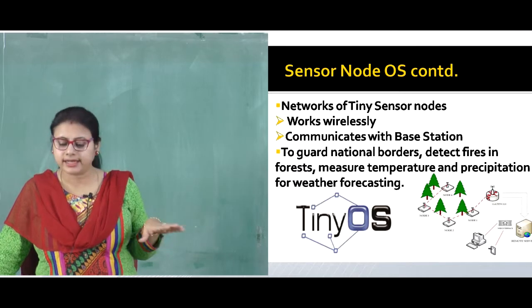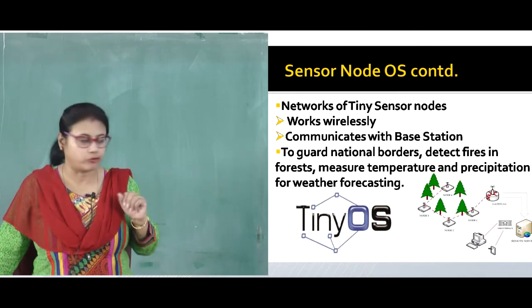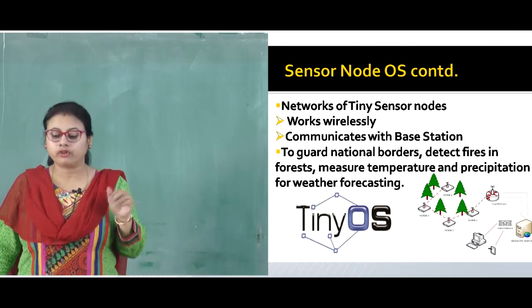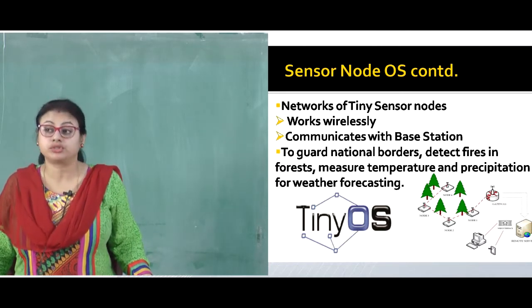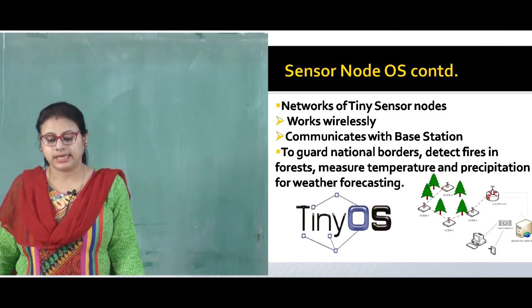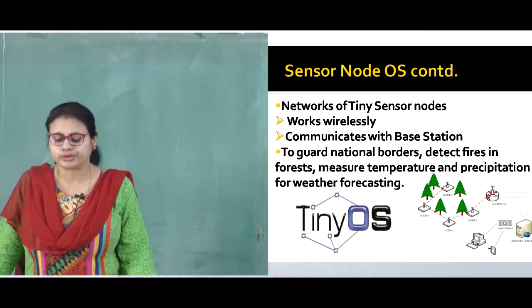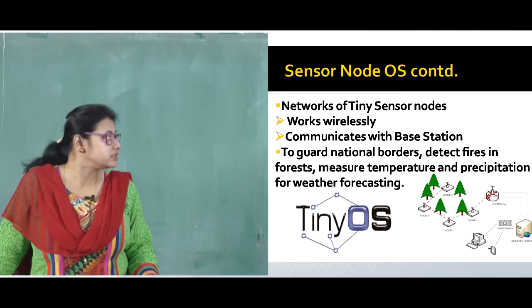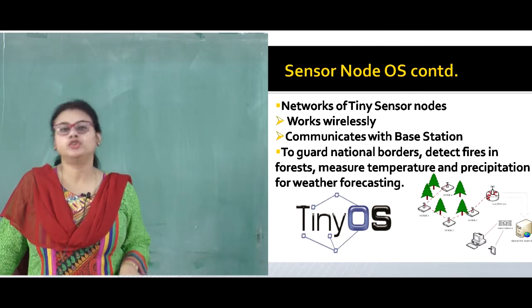Looking at the picture, different sensor nodes are scattered in a forest, forming one sensor network connected to a single gateway, which is then connected to a base station. These sensor nodes must work wirelessly since in a forest there is no wired infrastructure. They are used to guard national borders, detect fires in forests, and measure temperature and precipitation for weather forecasting.